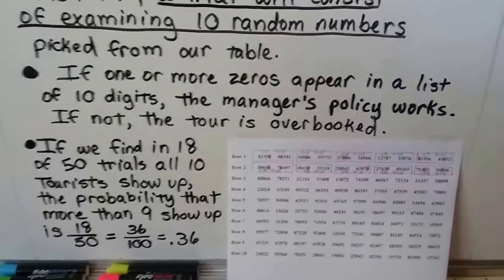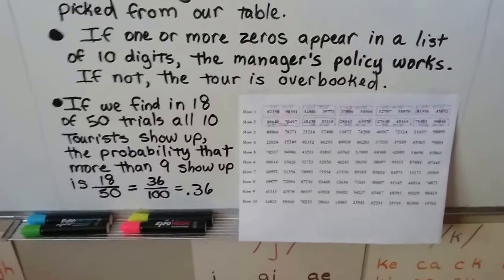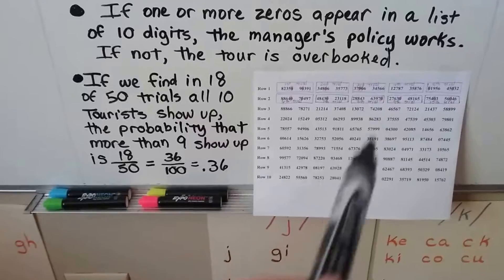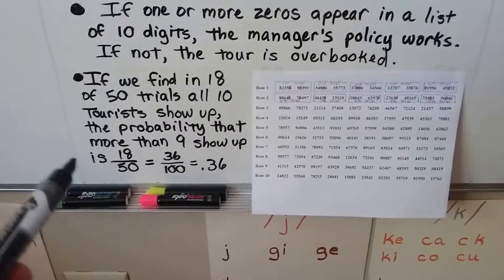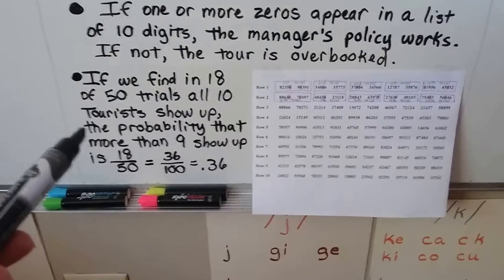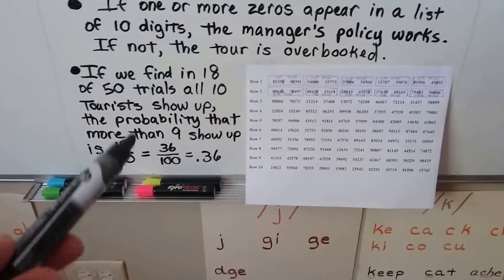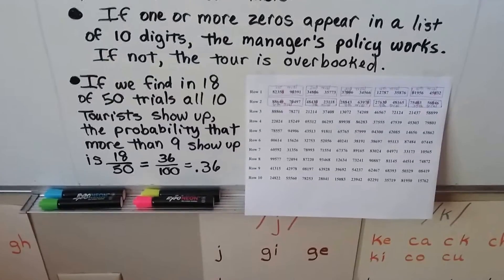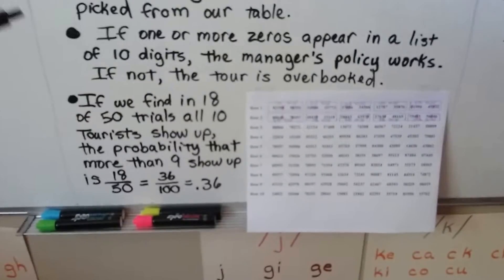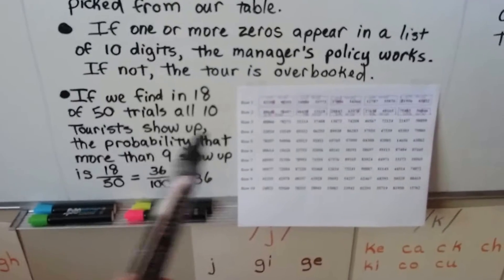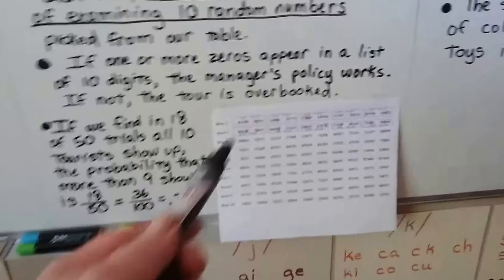So if one or more zeros appear in the 10 digits in each trial, the manager's policy works. So we find 18 of 50 trials, all 10 tourists show up. The probability that more than 9 show up is 18 fiftieths, which is, if we multiply them both by 2, 36 one hundredths or 0.36. So if we do 50 trials, and 18 of them have 10 tourists showing up, then we've got 0.36.